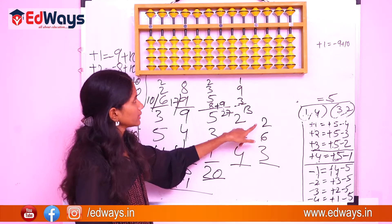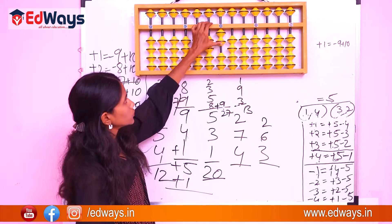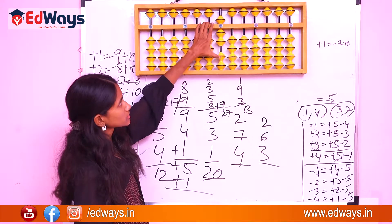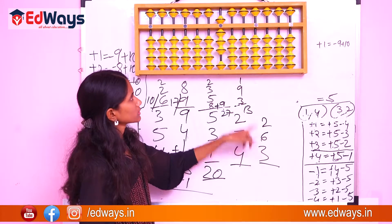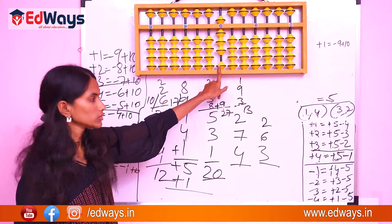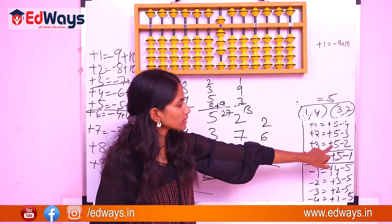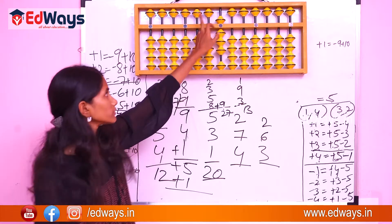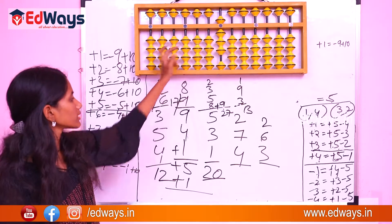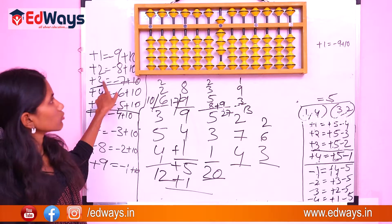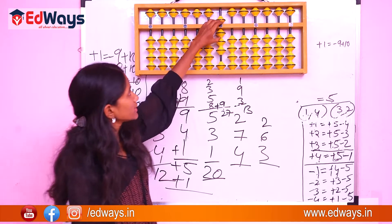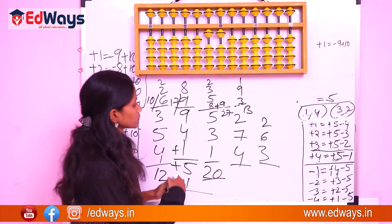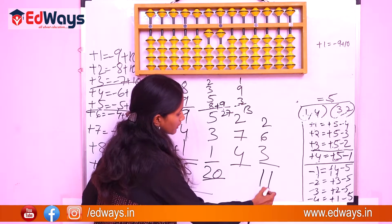Example: 2 plus 6 plus 3. Start with 2, then add 6: 5 and 6 — available. Now add 3: no 3 beads available. Fives complement: plus 3 equals plus 5 minus 2, but 5 is not available. So use tens complement: 3's complement is 7, so minus 7 plus 10. The answer is 11.